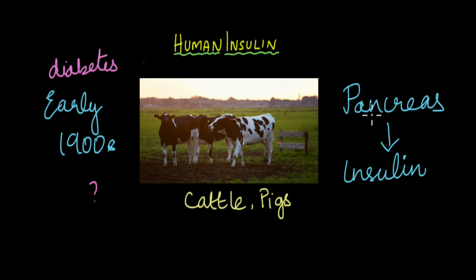They were slaughtering them, harvesting their pancreas and extracting insulin from the pancreas. This was not a very good way of getting insulin. Why?